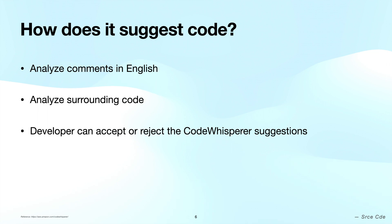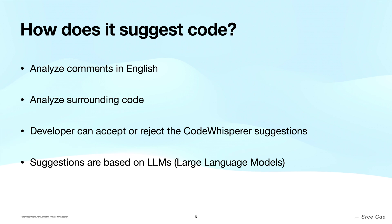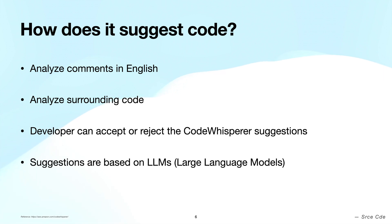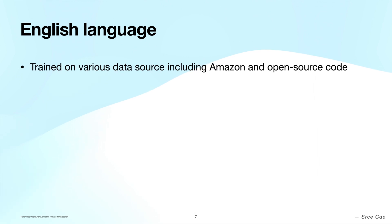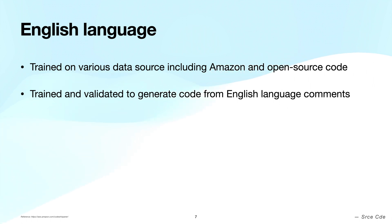In the editor, the developer can accept or reject code suggestions given by CodeWhisperer. The code suggestions are based on large language models trained on billions of lines of code, including Amazon and open source repositories. CodeWhisperer analyzes comments in English — but does that mean it only supports English? CodeWhisperer is trained on different data sources including Amazon and open source code, so the training data may contain non-English data, but it is trained and validated to generate code from the English language.